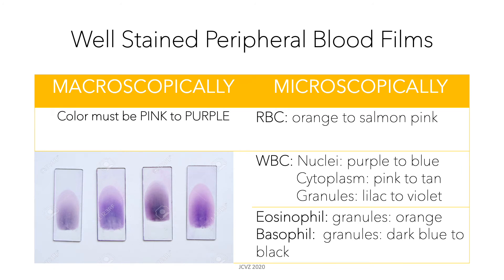How would you be able to tell if you have a well-stained peripheral blood film? Macroscopically, the color should be pink to purple. When you look at it under the microscope, red blood cells should appear orange to salmon pink, while white blood cells should have purple to blue nuclei and a pink to tan cytoplasm. Granules should be lilac to violet, eosinophils should have orange granules, and basophils should have dark blue to black granules.